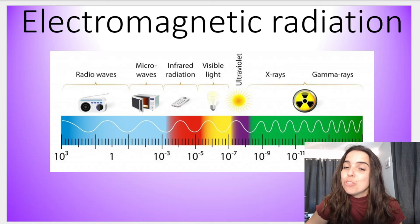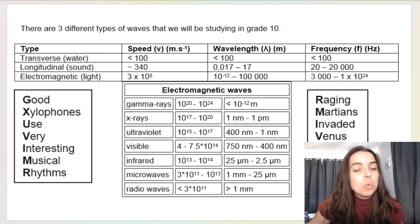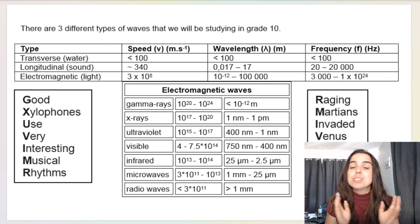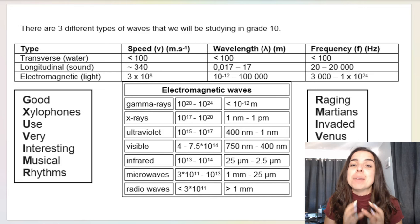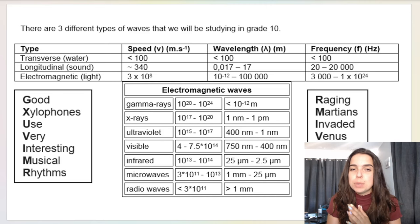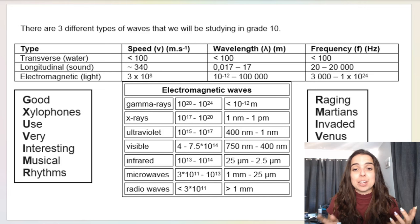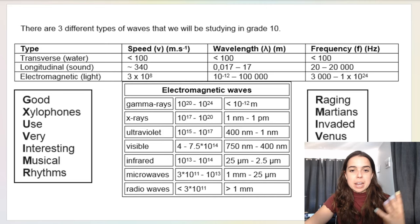Electromagnetic radiation. First things first — remember we have learned so far about different types of waves. We've learned about mechanical waves, which are waves that require a medium to travel through, and we spoke about transverse waves and longitudinal waves. Today we are speaking about electromagnetic waves. They are not mechanical waves — they can travel through a vacuum. On the screen behind me you can see a summary of the different types of waves and especially electromagnetic radiation.